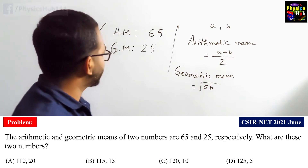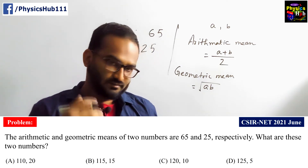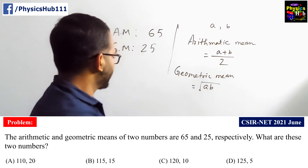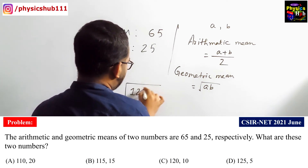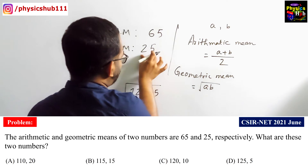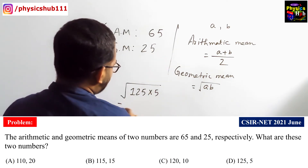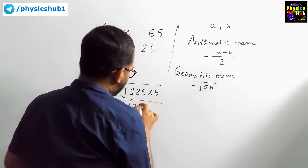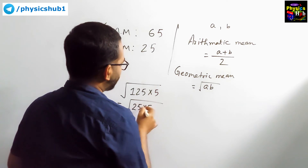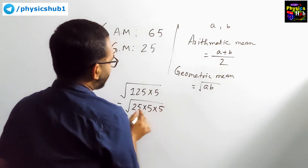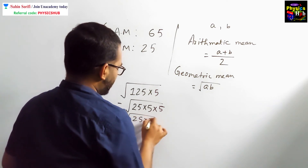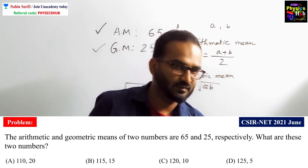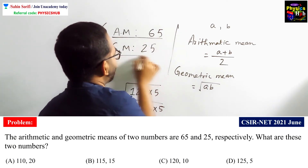So we have to use the geometric mean. If you look carefully at option D, it is root over of 125 times 5. We need the result to be 25. Notice that 125 times 5 equals 625, which is 25 squared, so the square root gives us 25. Option D satisfies both conditions.